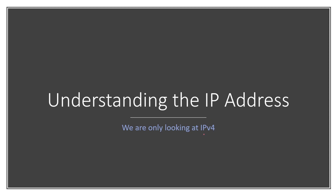In this video, we are only looking at IPv4. What does a simple IPv4 address look like? It's something like 10.2.1.5. This is a very simple, very basic IP address. What are these individual components? Why are there four numbers, and why are they separated by a dot in between?